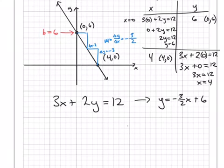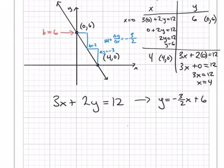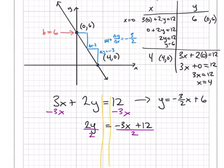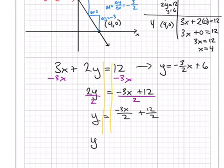Let's verify that using equation manipulation. Starting with 3x plus 2y equals 12, I want to get y alone on the left side. I'll subtract 3x from both sides — that changes how the equation looks but not its value, since we're doing the same thing to both sides. Then I divide both sides entirely by 2. On the left, y is completely alone. On the right, negative 3x divided by 2 and 12 divided by 2, giving y equals negative 3 over 2 times x plus 6. And so it's true.